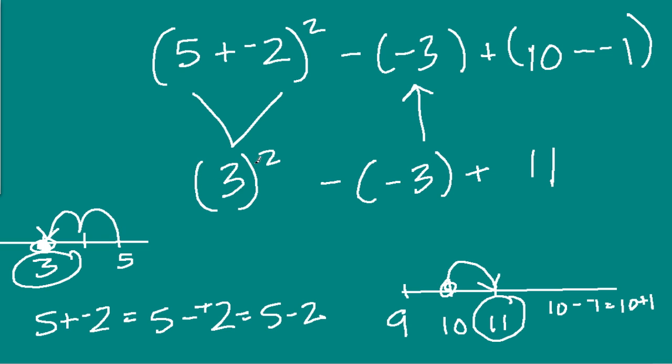Now we deal with the exponents. 3 to the second power is 3 times 3, not 3 times 2, and it's 9. Minus a negative 3. Well, that's kind of what we had here, except we didn't write those parentheses around the 1. So I'm just going to solve this part. Minus negative 3. Minusing a negative, as we said already, is adding. So it's 9 plus 3, and then plus 11. 9 plus 3 is 12, plus 11 is 23. And that's our answer.